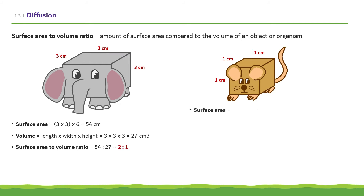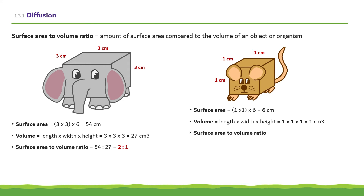Now we'll work out the surface area to volume ratio of the mouse. Each side is 1cm long and 1cm wide, so we multiply these together, and as there are 6 sides to a cube, we multiply by 6, giving a total surface area of 6cm². Using the volume formula, we get 1 × 1 × 1, which is 1cm³. Putting these into a ratio gives 6:1.